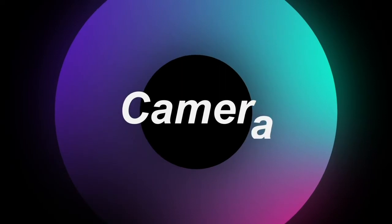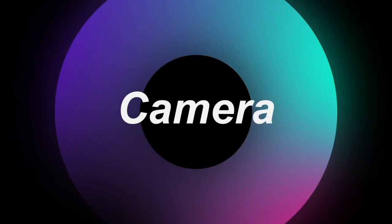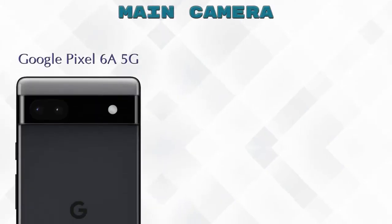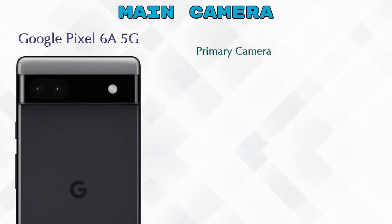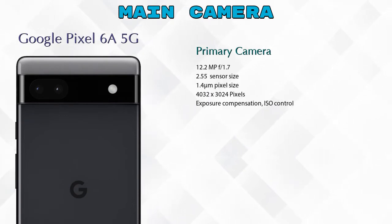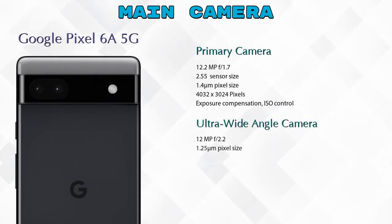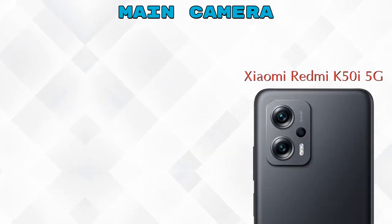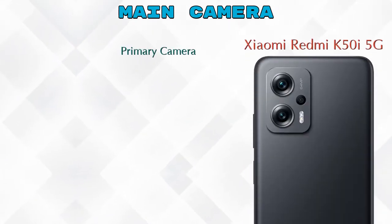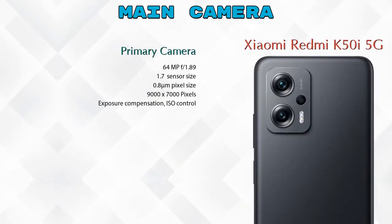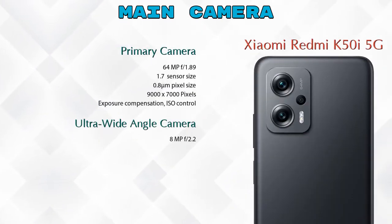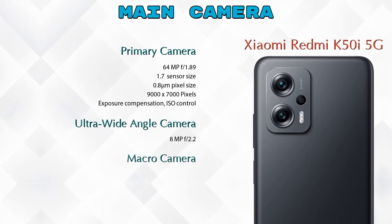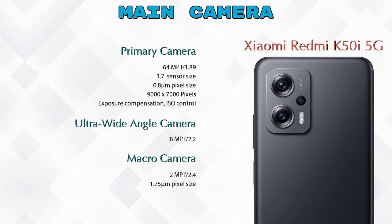Now let's look at our favorite feature — the camera. For the rear camera, the Pixel 6A 5G has two cameras: a primary camera and an ultra-wide-angle camera. The Redmi K50i 5G has three cameras: a primary camera, an ultra-wide-angle camera, and a macro camera.